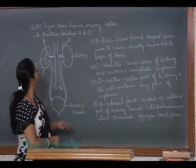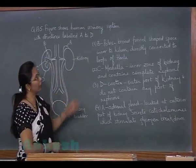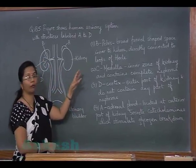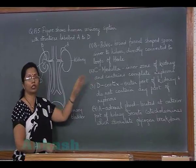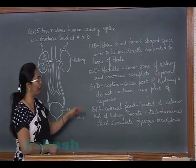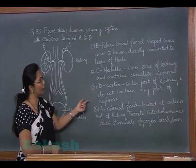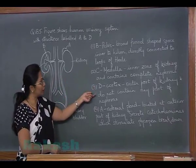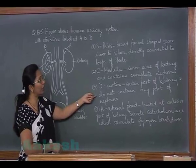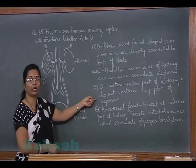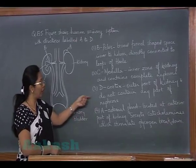Option 2 states C is the medulla — inner zone of the kidney containing complete nephrons — which is wrong because it contains only part of the nephron. Option 3 states D is the cortex, which is correctly labelled as the outer part of the kidney, but the second part is incorrect: the cortex does contain parts of the nephron including the convoluted tubule and Bowman's capsule.